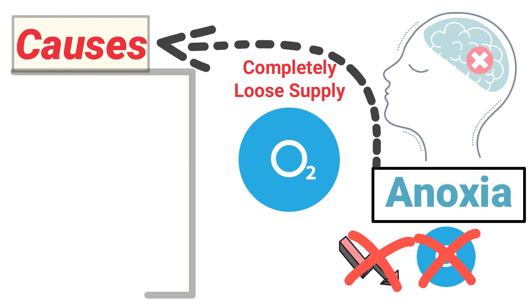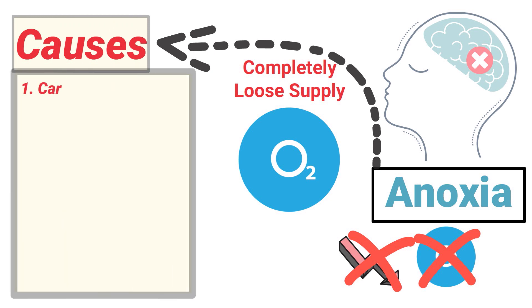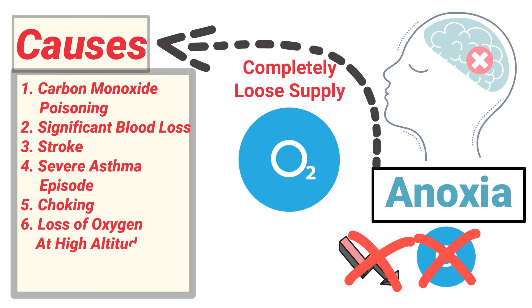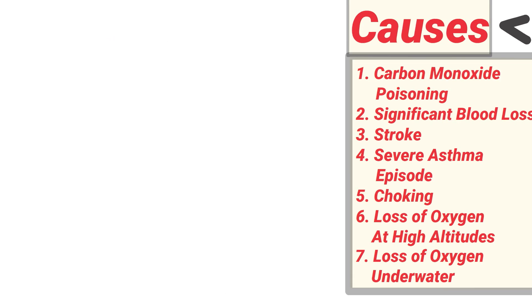Some causes of anoxia include: carbon monoxide poisoning, significant blood loss, stroke, severe asthma episode, choking, loss of oxygen at high altitudes, and loss of oxygen underwater in a near-drowning occurrence.